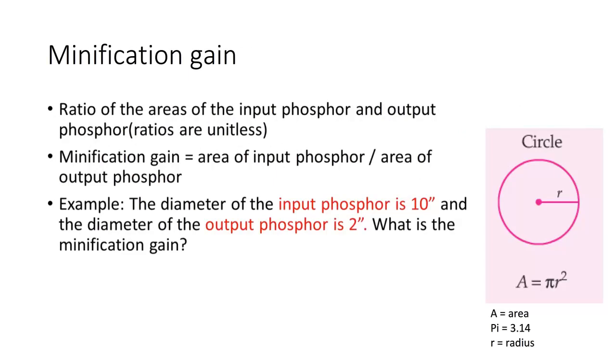Let's start with minification. It is a ratio of the areas of the input phosphor and the output phosphor. You are going from a larger surface area to a smaller surface area, which is why it is referred to as minification. Also, understand that when I am describing ratios, these will not have units.